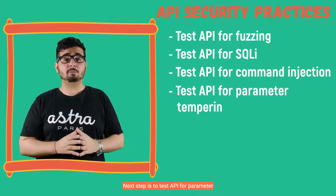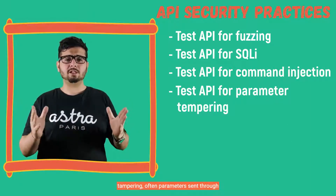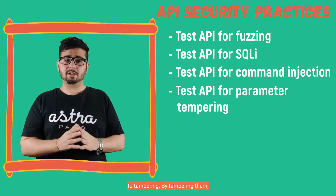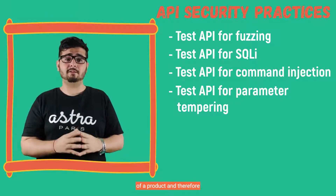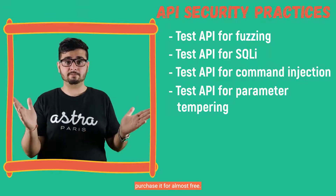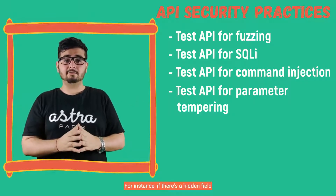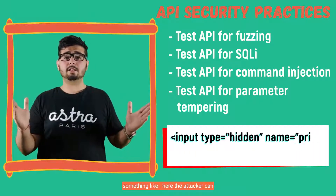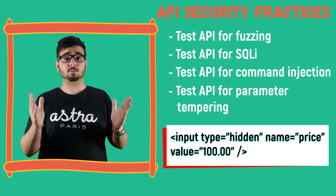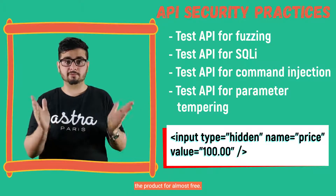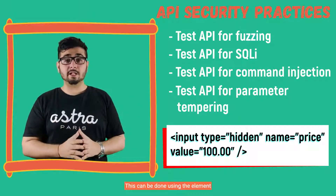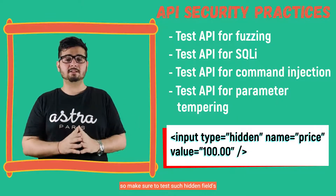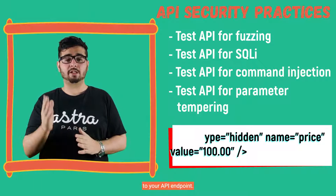The next step is to test API for parameter tampering. Parameters sent through an API request may be vulnerable to tampering. By tampering them, an attacker can change the values of a product and therefore purchase it for almost free. For instance, if there is a hidden field in the form submitted by the user, the attacker can change the value from $100 to $1 and buy the product for almost free. This can be done using the element inspector in any browser, so make sure to test such hidden fields when sending requests to your API endpoint.